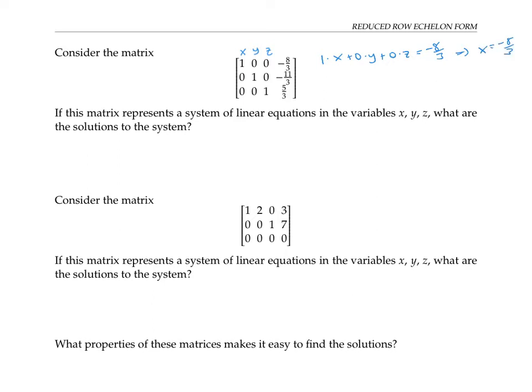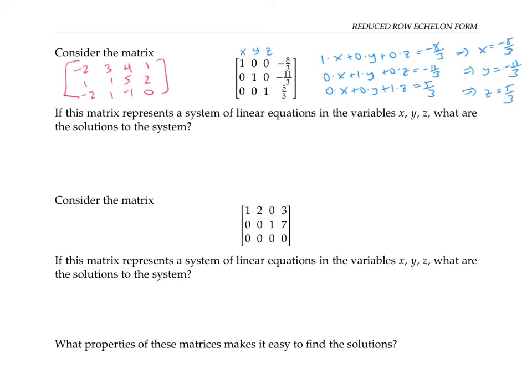Similarly, if we write out the second equation, we get that y equals negative eleven thirds. And the third equation tells us that z equals five thirds. So this matrix makes it really easy to read off the solution to a system of linear equations, much easier than this other matrix that we transformed into the simpler matrix, which actually has the same solution.